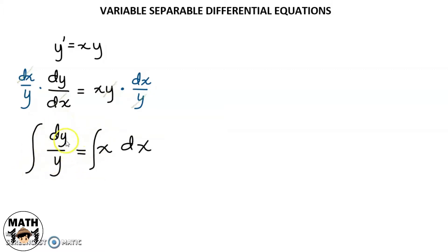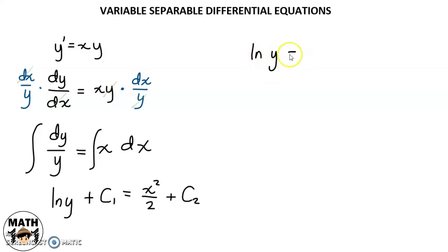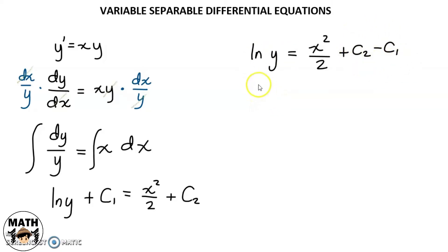Let's apply the common integral for dy over y, that will be ln of y. So, dahil indefinite integration, we'll have a constant — tawagin natin c1 — equals, for the integral of the right side, we'll have x squared over 2, and dahil nga indefinite integration, meron tayong constant na c2. So, ilipat natin lahat ng non-y term sa right side. We'll have ln of y equal to x squared over 2 plus c2 minus c1. Take note na si c2 at si c1 ay constant. So, kapag pinagsama natin yan, constant din yung lalabas. Pwede natin isulat yun as one term lang, tawagin na lang natin c.